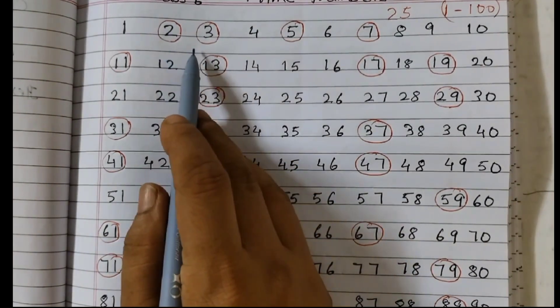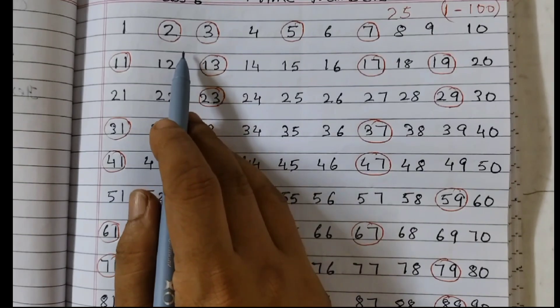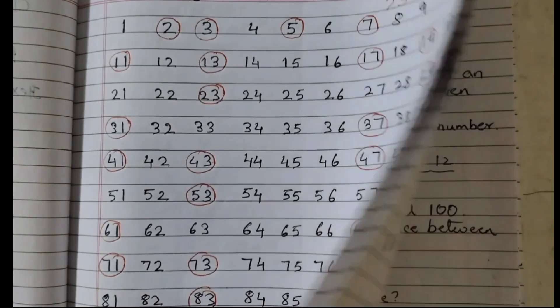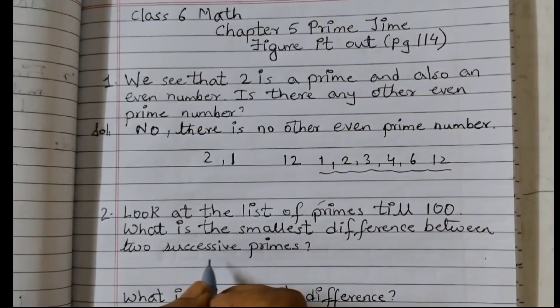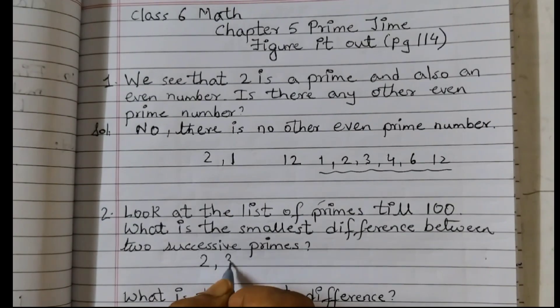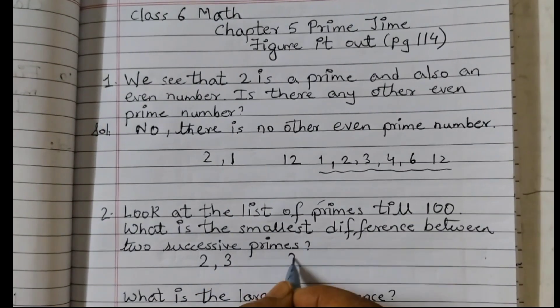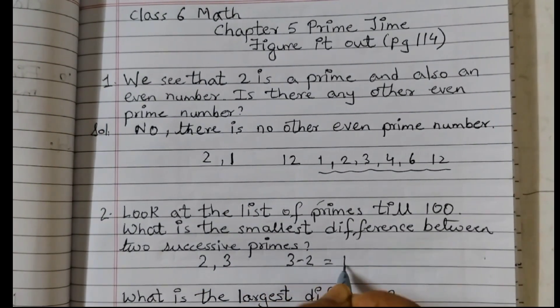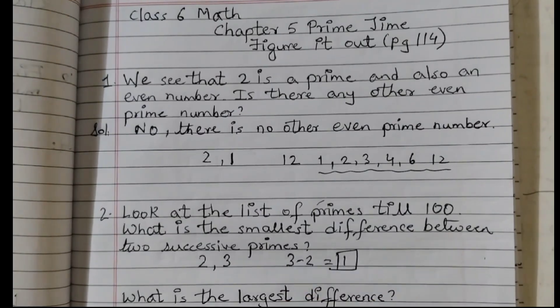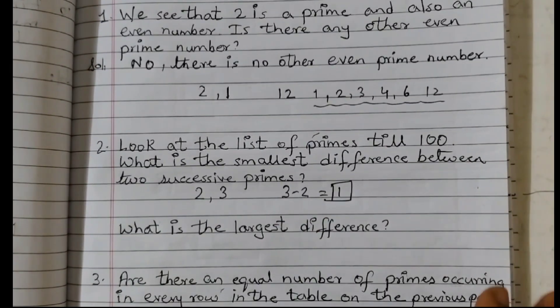If you see here, 2 and 3, there is no other number in between. So we can say the smallest difference is 1 because if I take 2 and 3, 3 minus 2 is 1. So smallest difference is 1. And what is the largest difference?